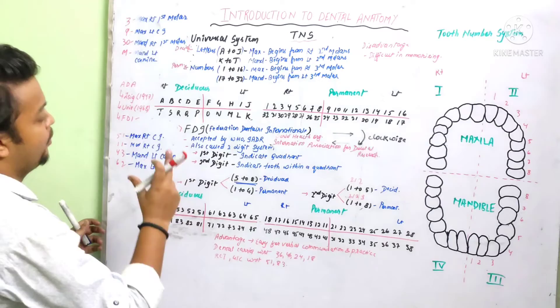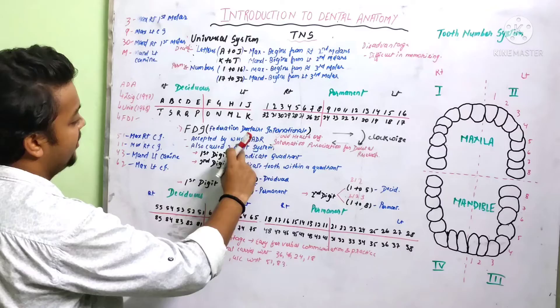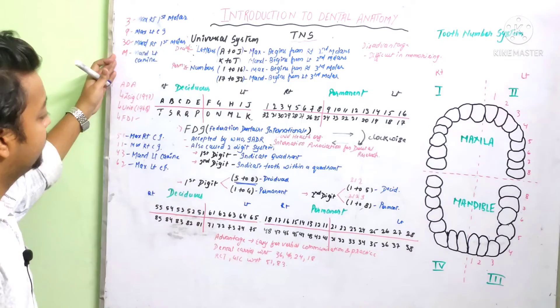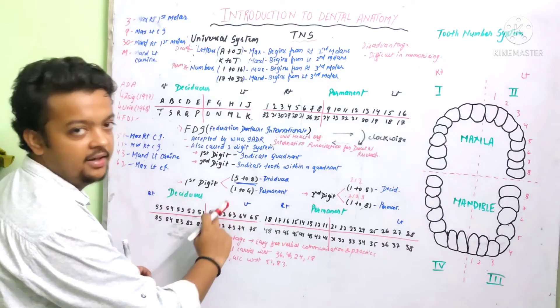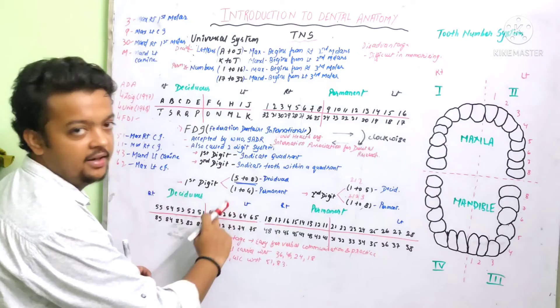If a question comes for 10 or 5 marks about the tooth number system, simply write the main points: Zsigmondy-Palmer, Universal, and FDI system. Write the main content and include the quadrant form for all systems — that is how you will get good marks. That is all about the tooth number system. I hope you enjoyed the video. Do like, share, subscribe, and comment on the video topics you want me to make a video on.